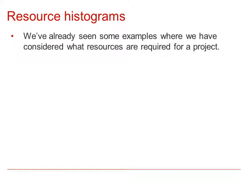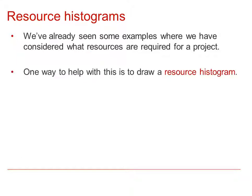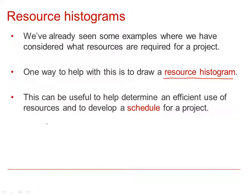We've already seen some examples where we've considered what resources are required for a project, and we know that one way to help with this is to draw a resource histogram. A histogram essentially shows the number of workers active at any given time. This can be useful to help determine an efficient use of resources and to develop a schedule for a project. The schedule essentially lists the work required for each worker.